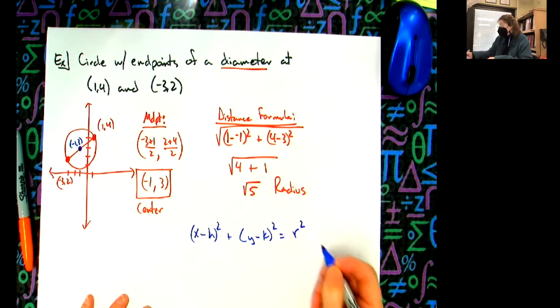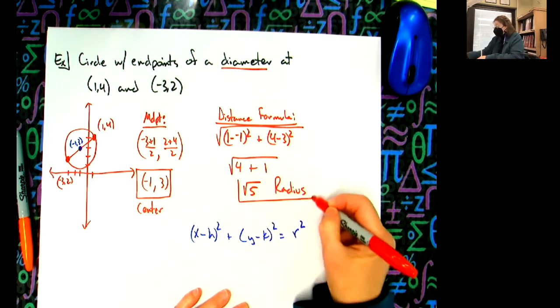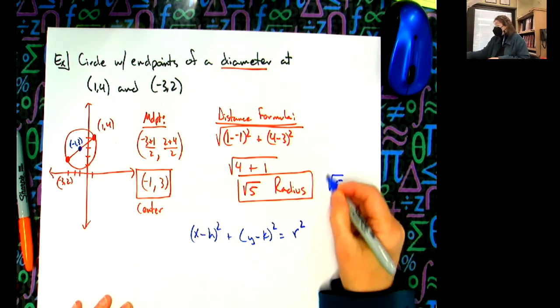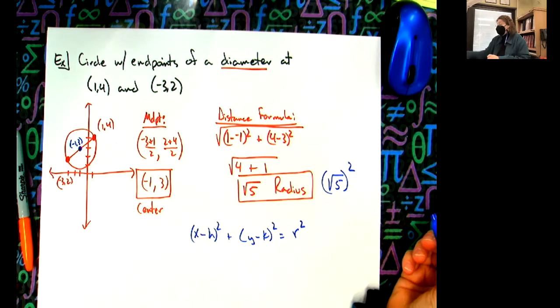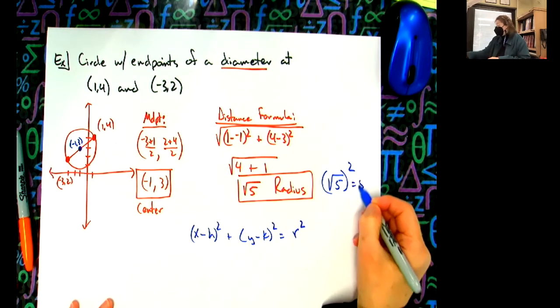I take the radius and I square it. So if my radius is the square root of 5 and then I square it, what number do I put in my equation? Five.